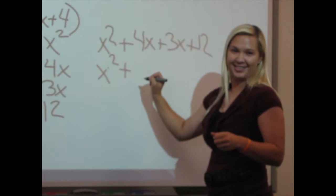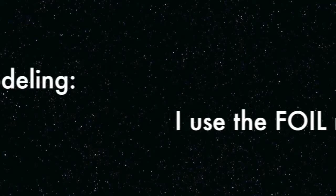And how do you make that into a simpler equation? Which would be? 4X and 3X combined would be 7X. So the simplified equation is X squared plus 7X plus 12.